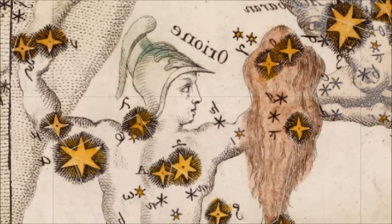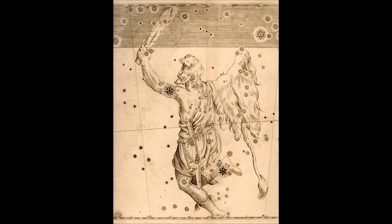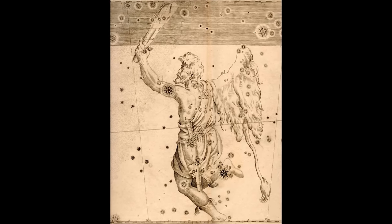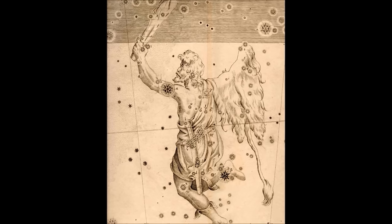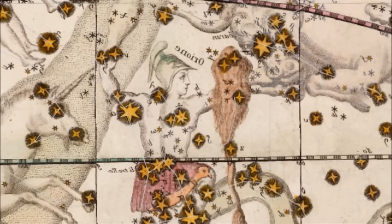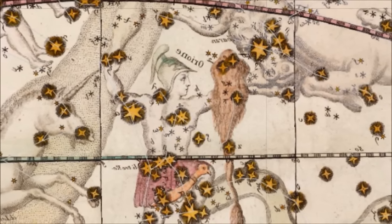Zeus sent the scorpion into the sky as well, and now the scorpion chases Orion around the heavens forever. That is why Orion is in the sky in winter. In summer, the scorpion comes and chases him away.